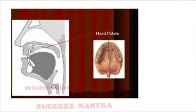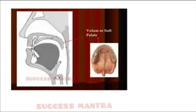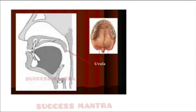The word 'palate' means the roof of the mouth. The hard palate is the front part of the roof of the mouth. The soft palate, also called the velum, is the back part of the roof of the mouth. The uvula is a fleshy extension at the back of the soft palate which hangs above the throat, as seen in the image.